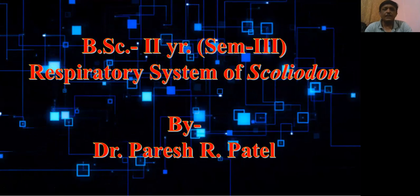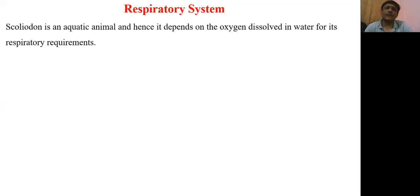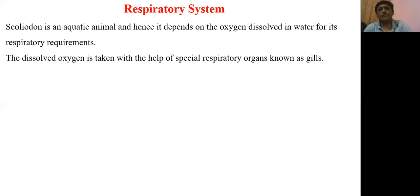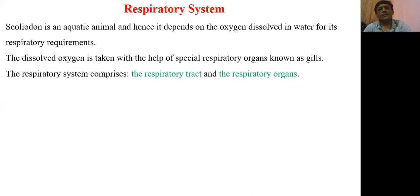Generally, Sclerodon is an aquatic animal and hence it depends on the dissolved oxygen present in water for its respiratory requirements. This dissolved oxygen in the water is absorbed by Sclerodon through specialized respiratory organs known as gills.